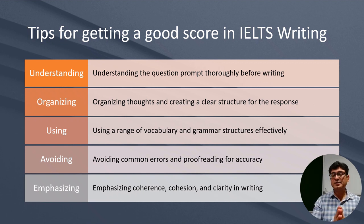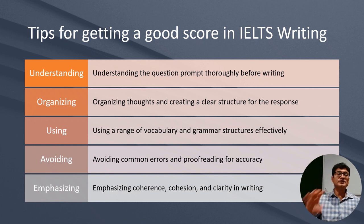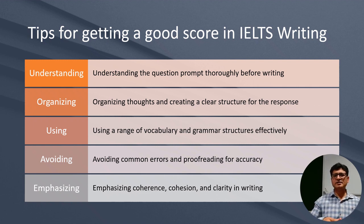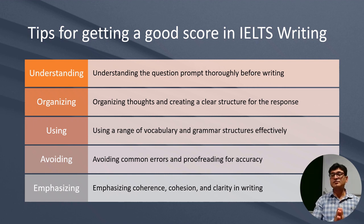Here are some tips for getting a good score in IELTS writing. First, understand the question prompt thoroughly before writing. In one of my own IELTS exams, the task was to compare physical health and mental health, but I misread it as physical health and wealth and started composing my outline based on that misunderstanding — I did very badly. Read the question very carefully and understand it thoroughly before writing.